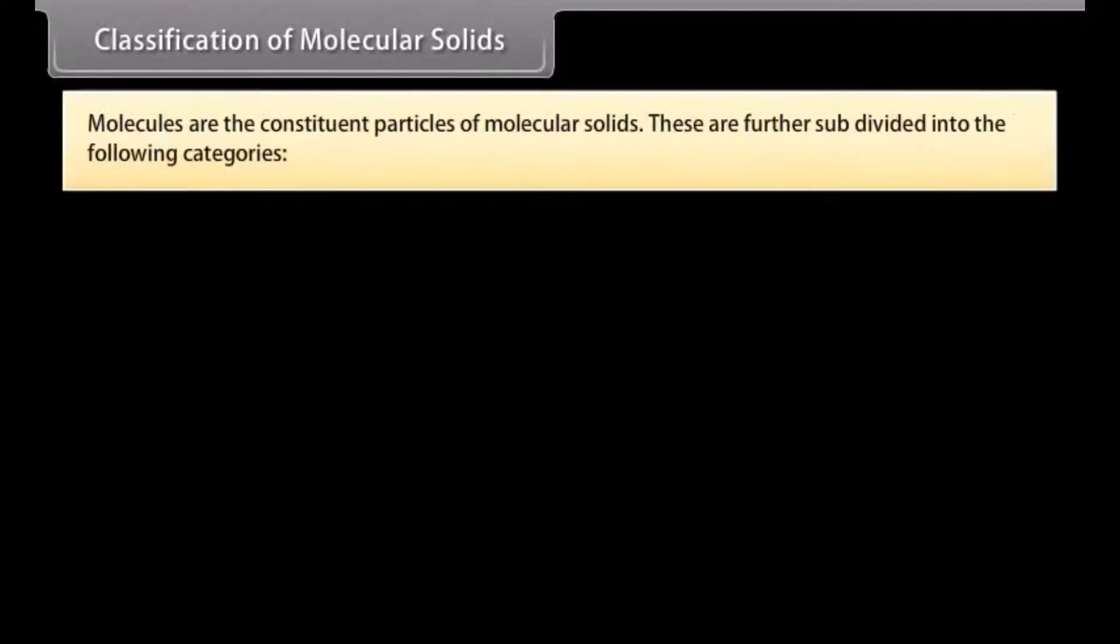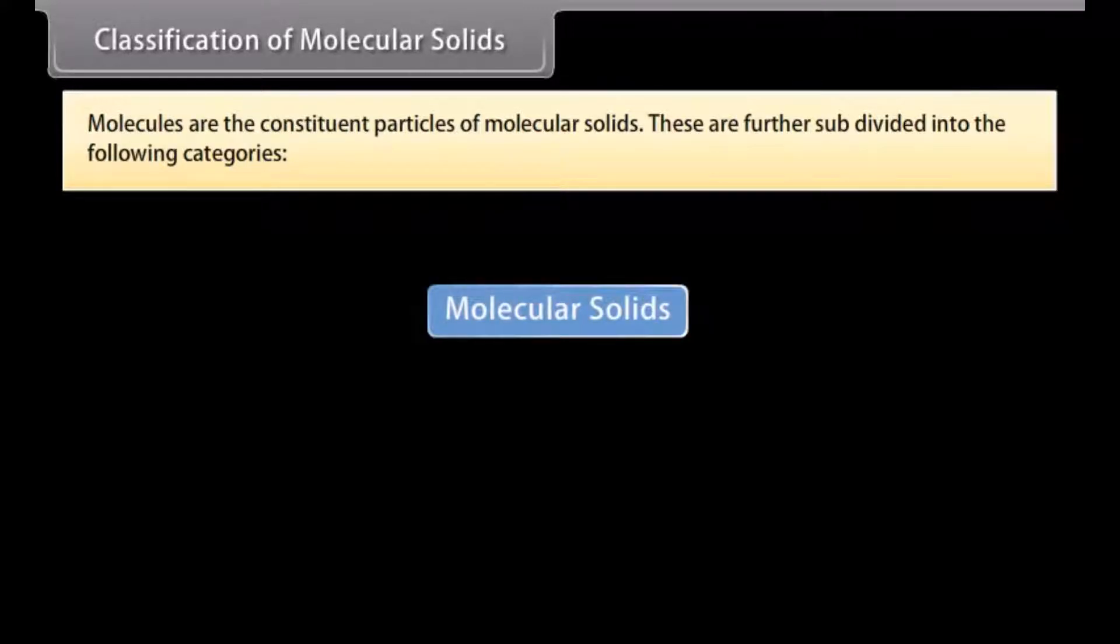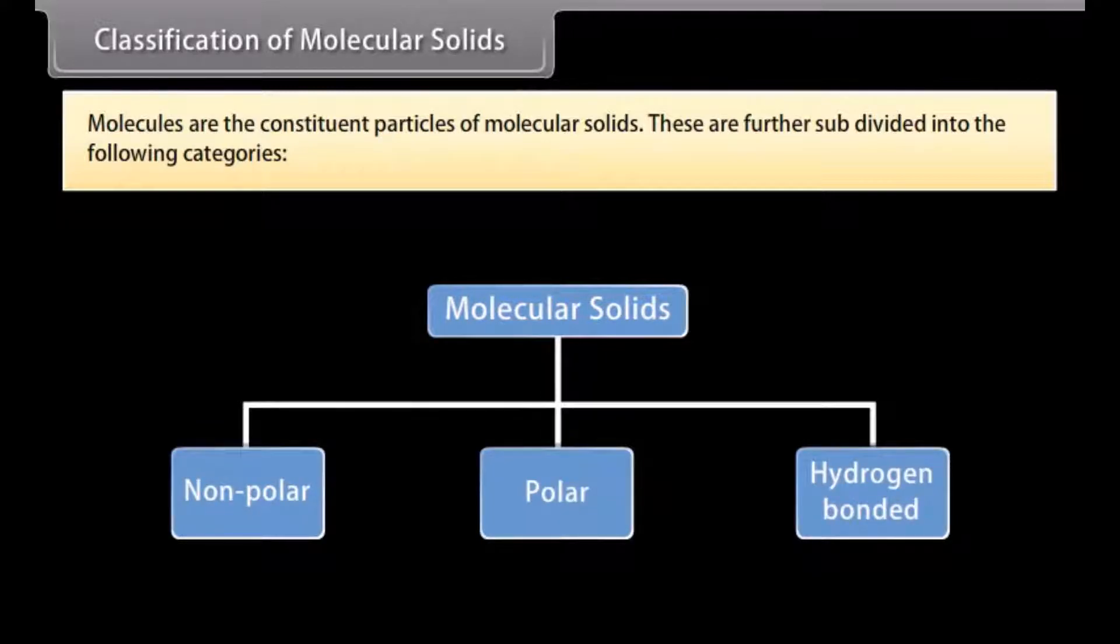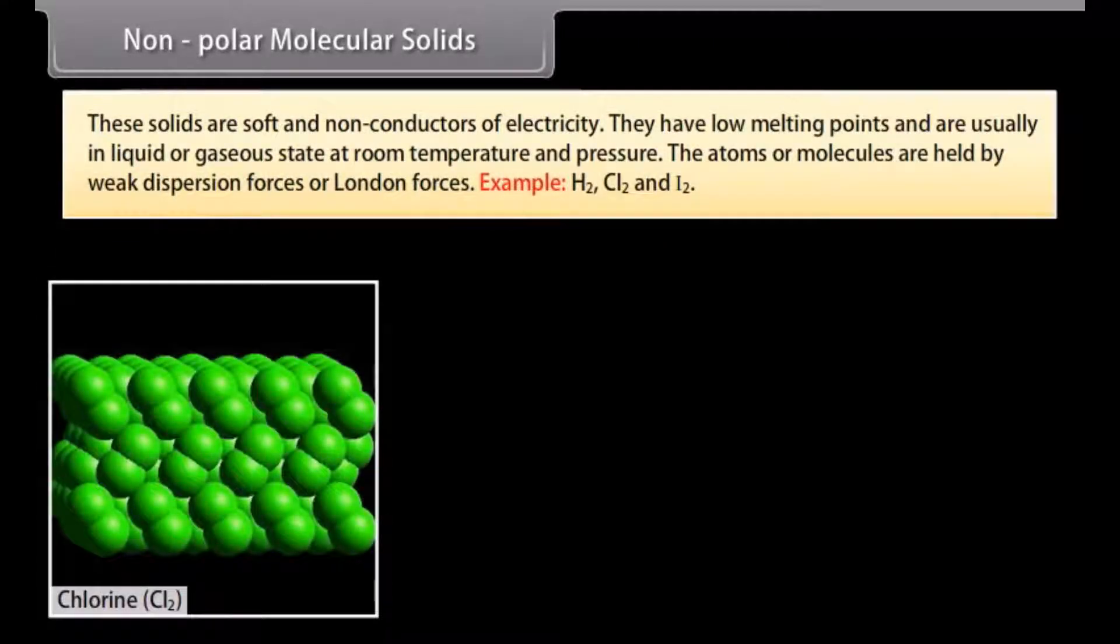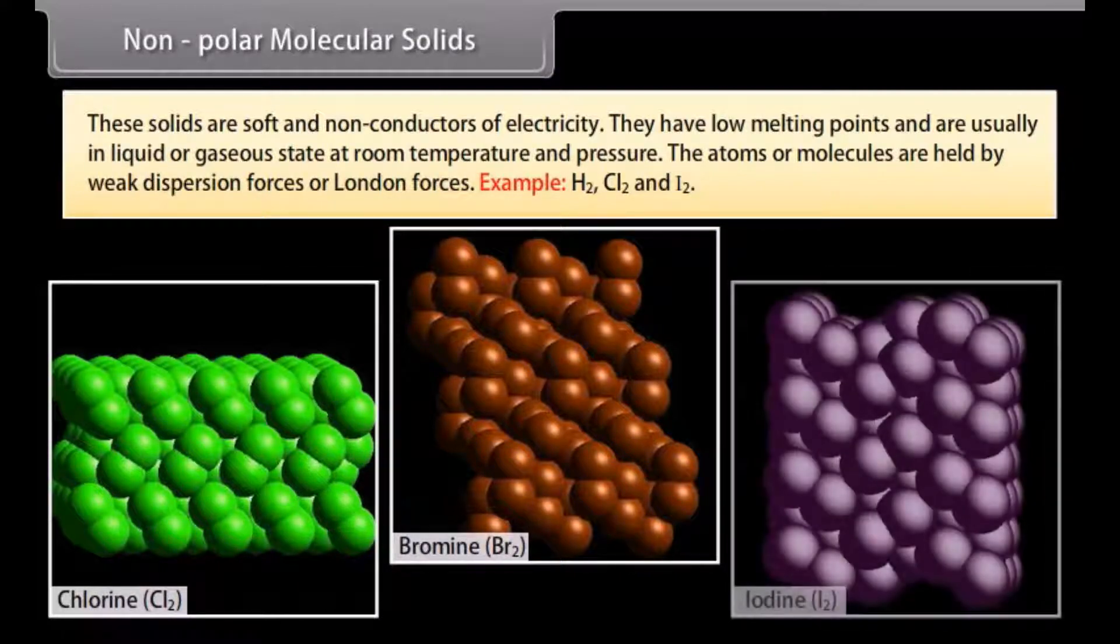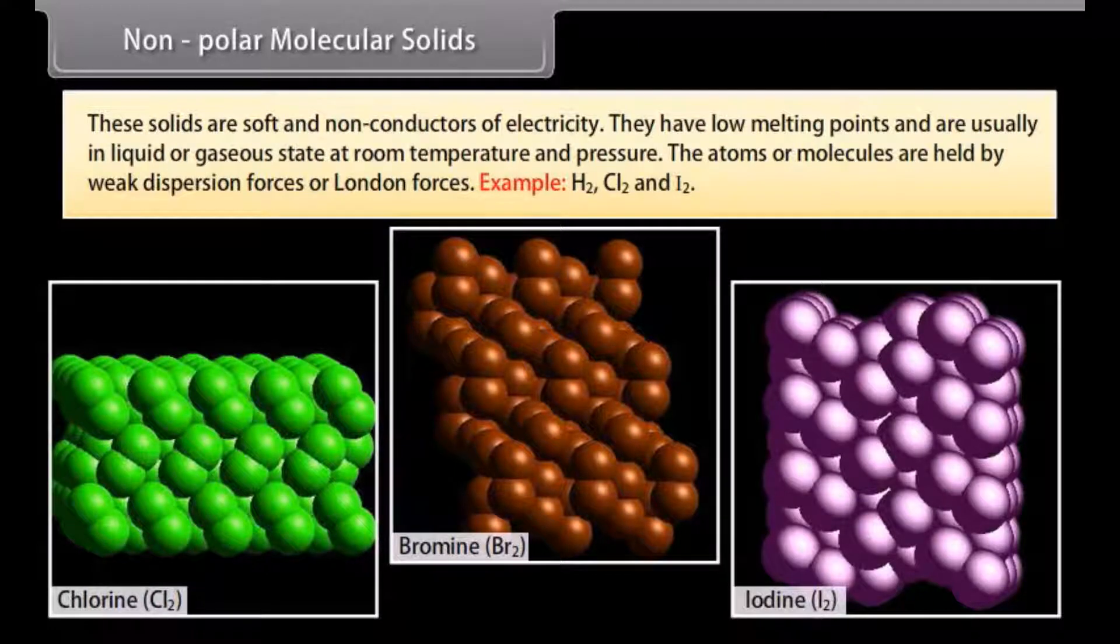Classification of molecular solids. Molecules are the constituent particles of molecular solids. These are further subdivided into the following categories. Nonpolar molecular solids: these solids are soft and non-conductors of electricity. They have low melting points and are usually in liquid or gaseous state at room temperature and pressure. The atoms or molecules are held by weak dispersion forces or London forces.